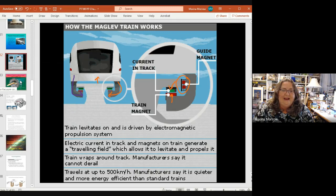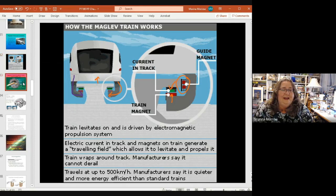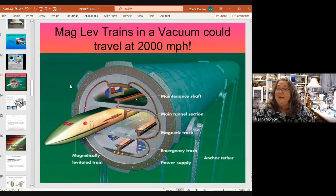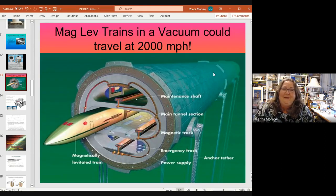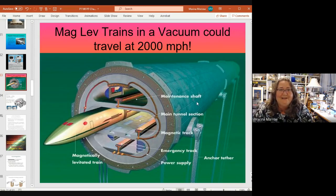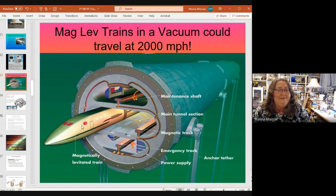The idea is it can't derail. If it runs out of power, it just would settle back to the track. You can maybe achieve huge speeds, especially if it's in a vacuum. This is an idea for a vacuum one under the sea, maybe between Japan and China. The train can travel 2,000 miles per hour if it's in a vacuum. This has air in these maintenance shafts that could flood in if there's an incident. That's the idea that we could have maglev trains.